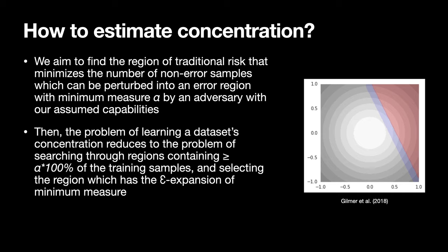This begs the question: how do we estimate the concentration of a dataset? Our goal is to find a possible error region in a class-agnostic setting which minimizes the number of non-error samples which can be perturbed into an error region with measure at least alpha by an adversary with our assumed capabilities. Alpha is typically chosen to reflect the state-of-the-art traditional risk. In this framework, the problem reduces to searching through regions with at least alpha proportion of the samples and picking the region whose epsilon expansion has minimal measure. In the graphic on the right, taken from Gilmer et al.'s 2018 paper, the red region represents our region of traditional risk and the blue region represents the points that an adversary could perturb into the error region under his particular assumed capabilities.